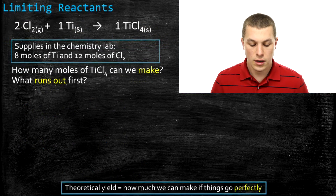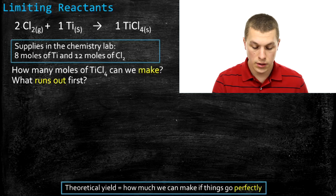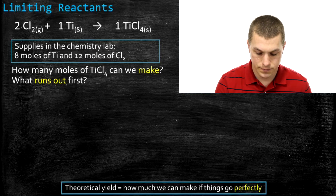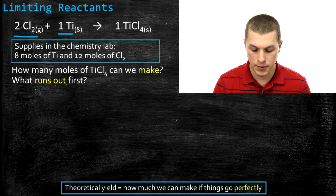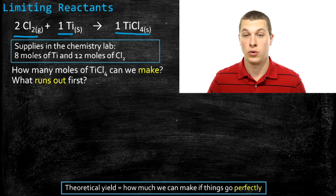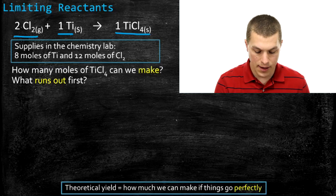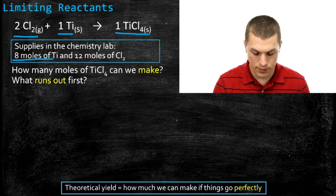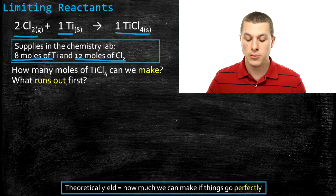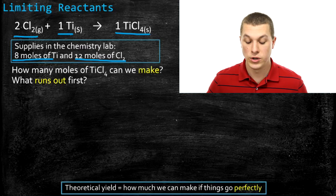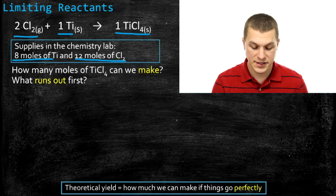Here we have a chemical reaction: 2 moles of chlorine (Cl₂) plus 1 mole of titanium gives 1 mole of titanium chloride. We go into the chemistry lab and find we have 8 moles of titanium and 12 moles of chlorine. We want to answer the same questions: how many moles of titanium chloride can we make, and which reactant runs out first?